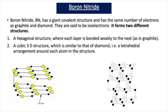This slide shows the two different forms of boron nitride. One of the forms looks like graphite and one looks like diamond. The first structure is called hexagonal boron nitride, and each layer is bonded weakly to the next, as in graphite. It looks very similar to graphite but there are differences we'll discuss later. The second structure is a cubic 3D structure called cubic boron nitride, which is similar to diamond — i.e. a tetrahedral arrangement around each atom in the structure.